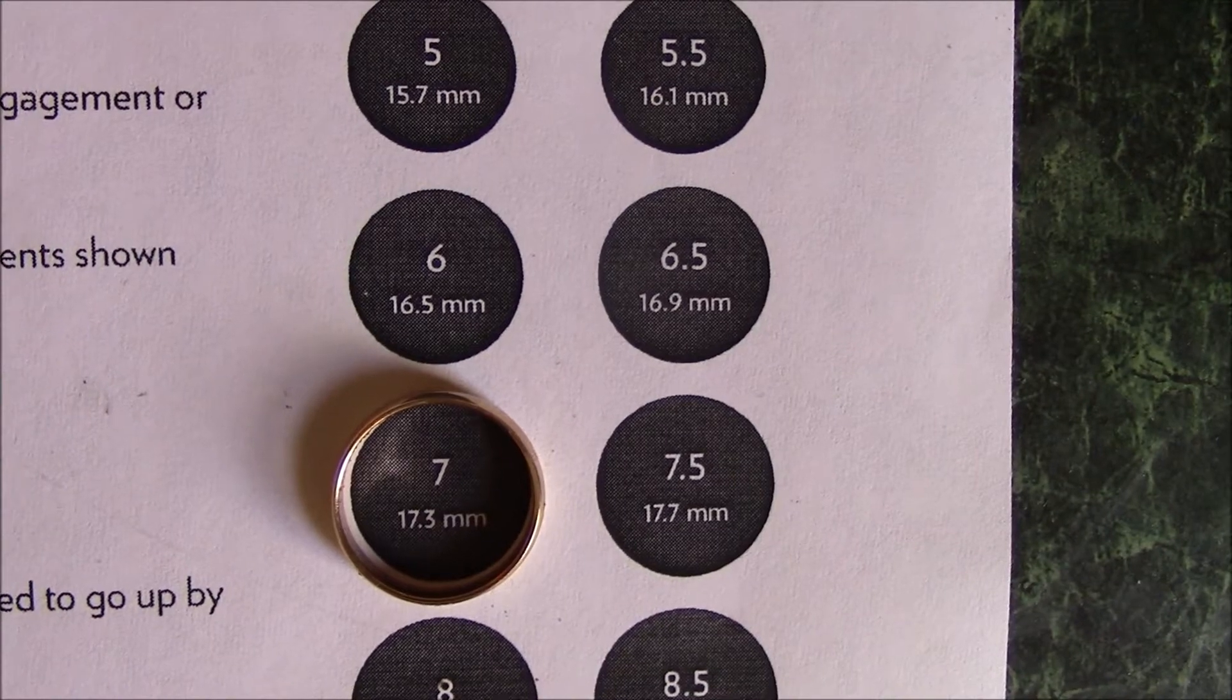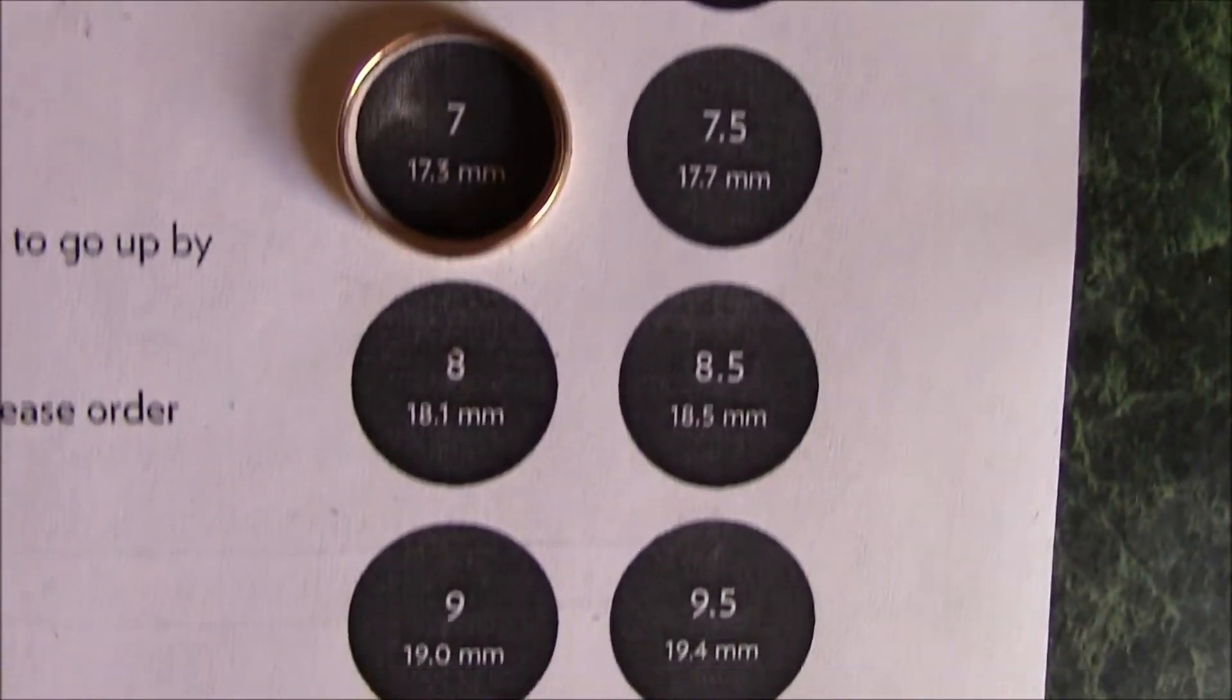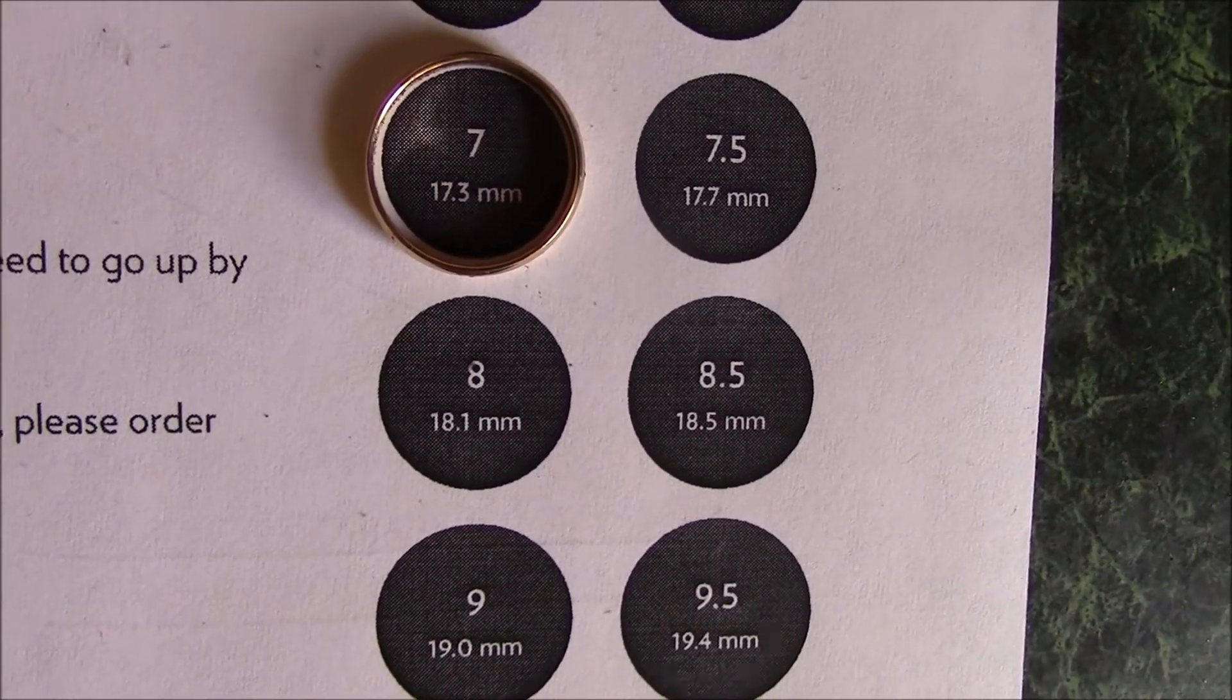Now, these circles represent the circumference of the finger. And then when you put the ring over these circles, it will then tell you the size of the ring.